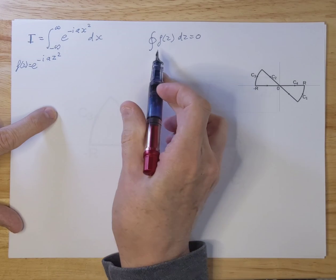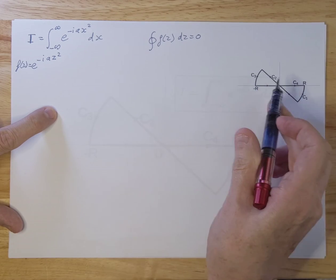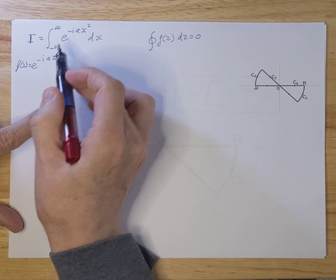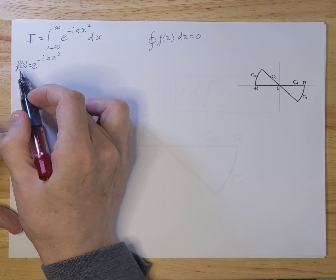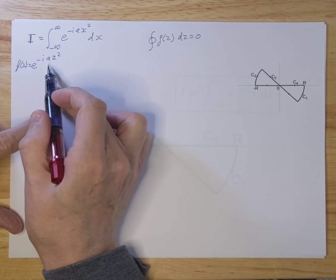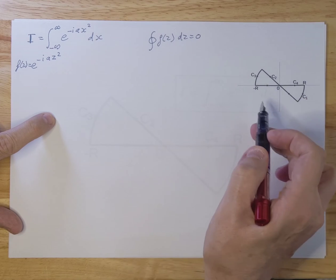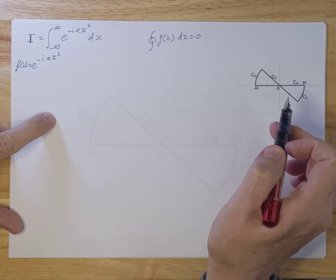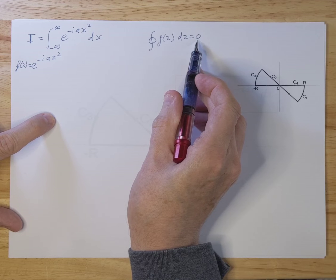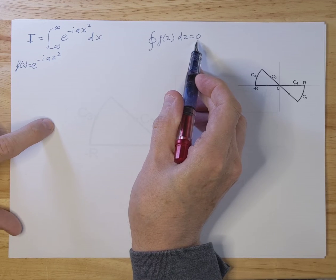If you do the contour without residues — there are no residues here because this is an analytic function everywhere. The f(z) function I defined is analytic over the full complex plane, so there are no residues, and the right-hand side of the residue theorem will be zero in this case.